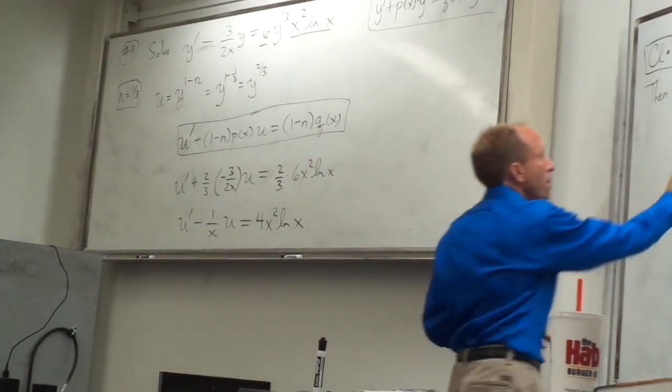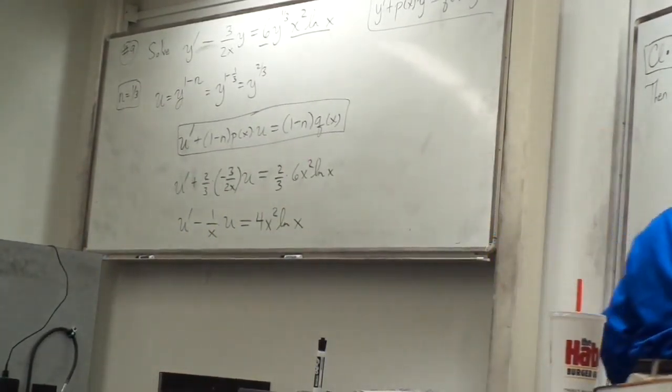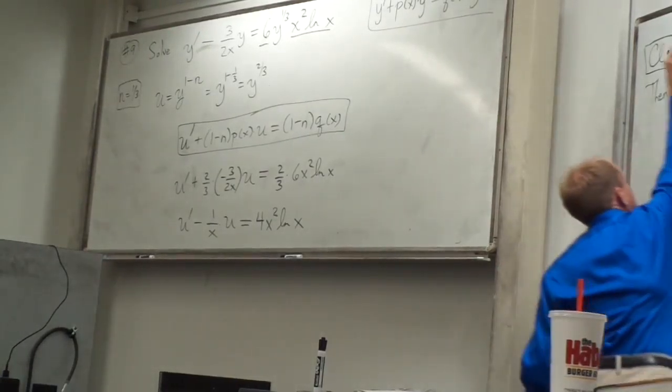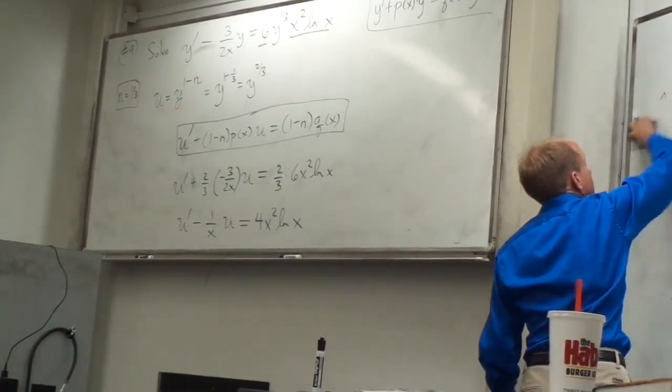Let's just simplify this. We have u prime — two thirds and three halves cancels out — it just becomes minus 1 over x times u equals, and here 12 over 3 is 4, so 4x squared ln of x. So far so good?